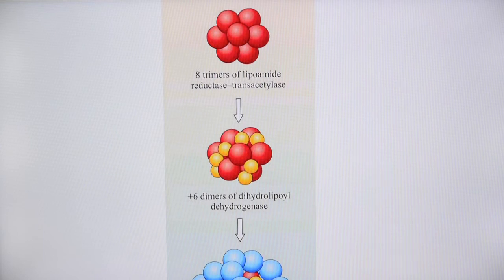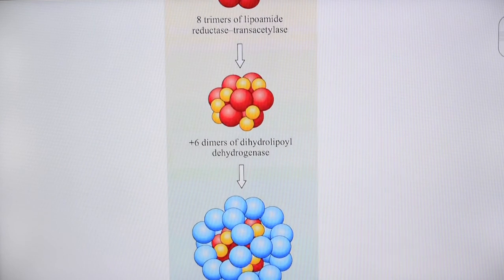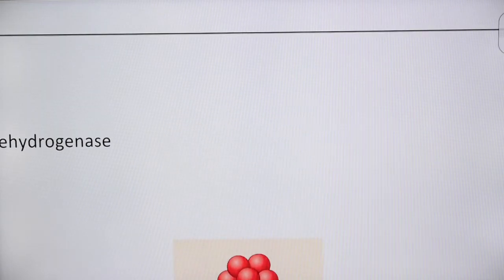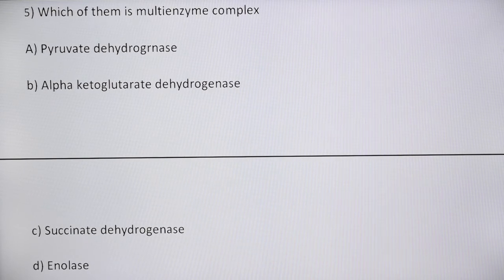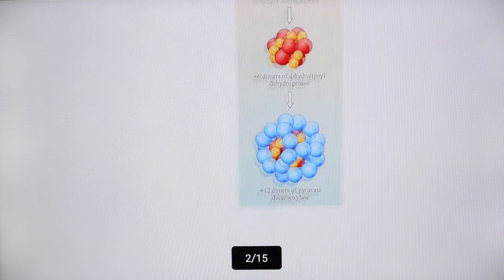Pyruvate dehydrogenase multi-enzyme complex contains three subunits: transacetylase (a trimer), dihydrolipoyl dehydrogenase (a dimer), and pyruvate decarboxylase. Similarly, alpha-ketoglutarate dehydrogenase is also a multi-enzyme complex. Of the given options, both pyruvate dehydrogenase and alpha-ketoglutarate dehydrogenase — options A and B — are the correct answers.